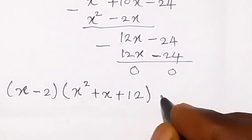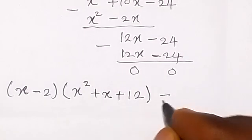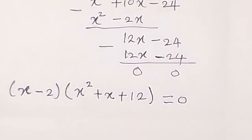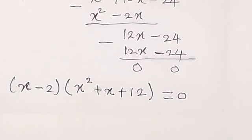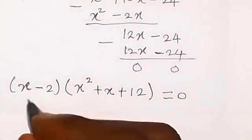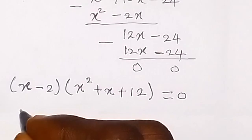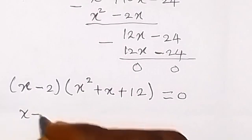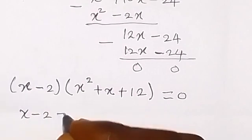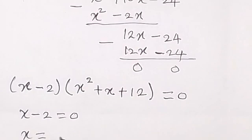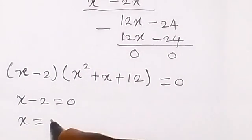This equals zero. We have been able to simplify the cubic equation. From the factor x minus 2 equals zero, we can say x equals 2.